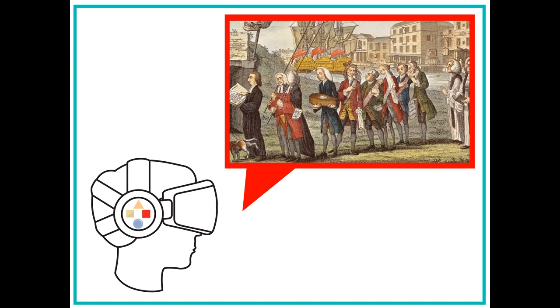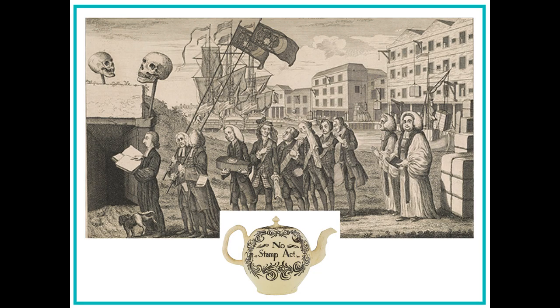The money raised from this tax was going to the British government. Newspapers, letters, paper, and even playing cards were taxed. The colonists were angry because they did not want to pay taxes. They felt that they were being taxed by a government where they were not represented. The protesters' slogan was no taxation without representation. The Stamp Act was so unpopular that teapots with no stamp act written on them were made.